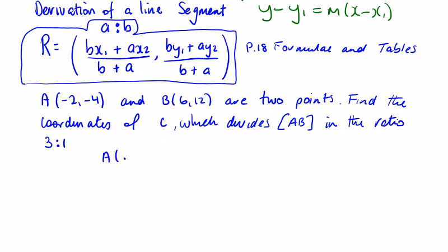So we've got A is (-2, -4) and B is (6, 12). So if I just do a little diagram here, A and B, and we want to divide this line segment up in a ratio of 3 to 1. So let's put our point here C. So this is 3 and this is 1.